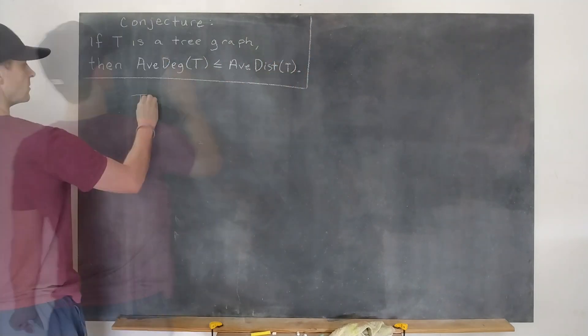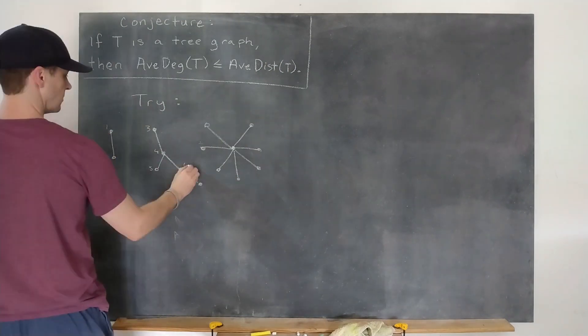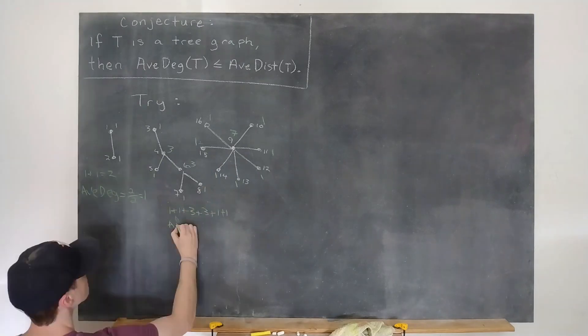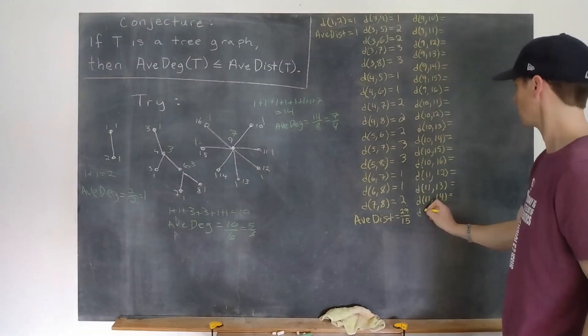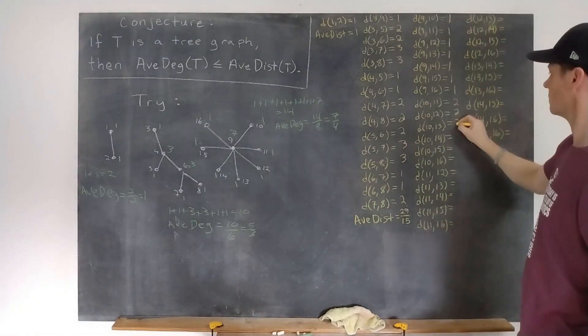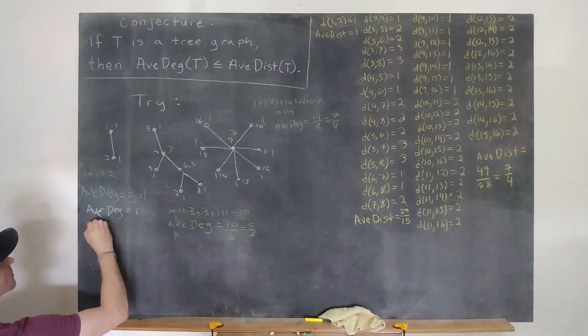The first thing we should do is try to break it. Perhaps it's wrong, and we can find a counter example. First, we'll count the degrees of each vertex and get the average degree. Then we'll count all of the distances between the vertex pairs in the graph. That's interesting. And calculate the averages. Let's see. And it checks out so far.